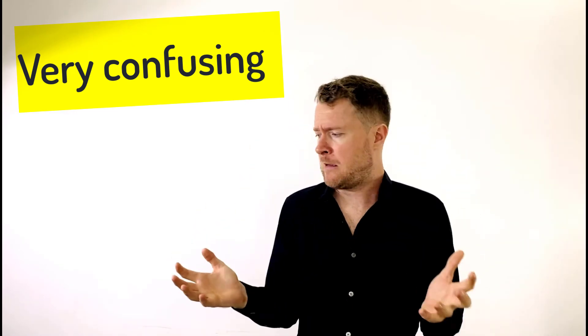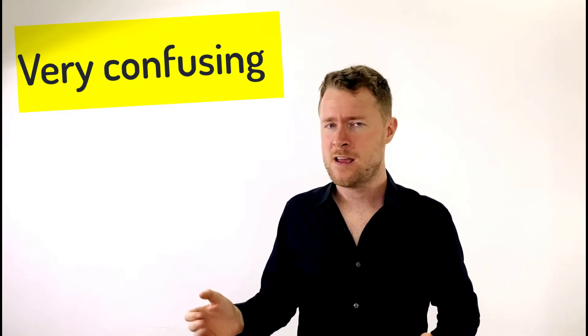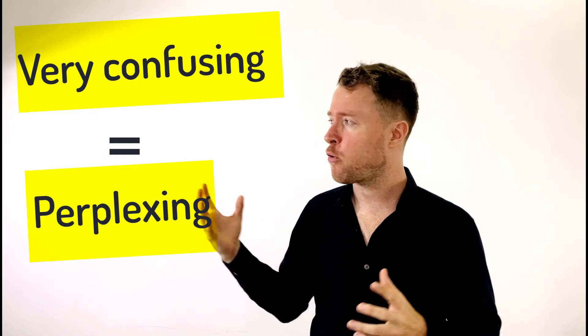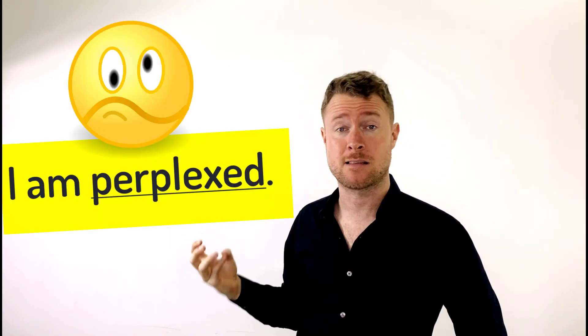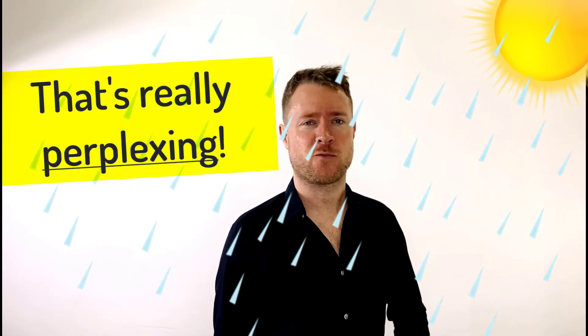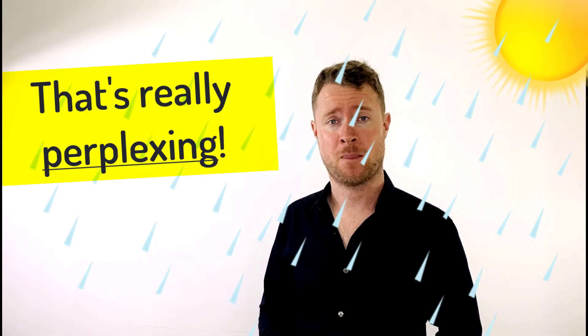The opposite here is something that is very confusing. We can say perplexing. A problem that is perplexing is a problem that you really can't find the answer to. I am perplexed. What is the answer to this problem? If you look up at the sky and you can't see any clouds but it's raining, you might say that's really perplexing. Why? Because it's confusing. Normally you need clouds for rain, but today there's no clouds but it's still raining. That's really perplexing.